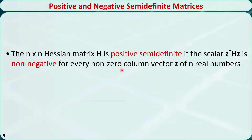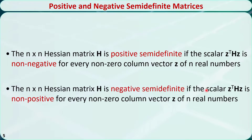Now let's check the concepts of positive semi-definite and negative semi-definite matrices. The n by n Hessian matrix H is positive semi-definite if the scalar resulting from the matrix multiplication Z-transpose times H times Z is non-negative for all nonzero column vectors Z of n real numbers. H is negative semi-definite if that scalar is non-positive for every nonzero column vector Z of n real numbers.